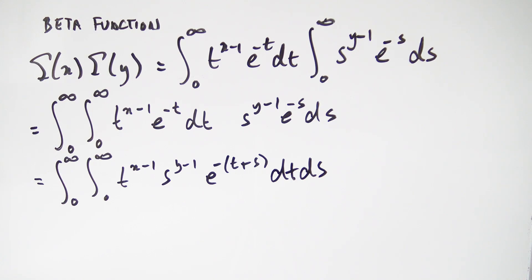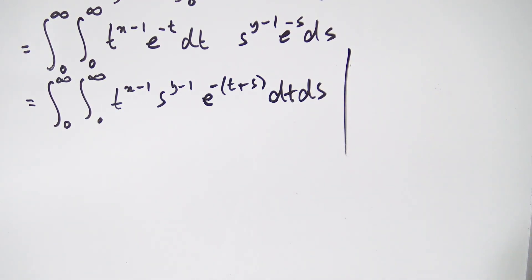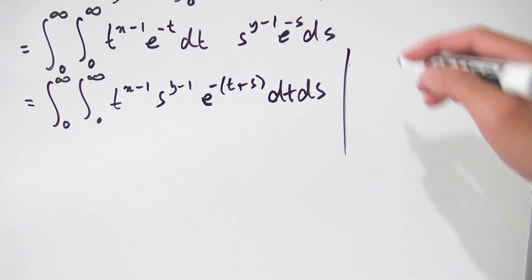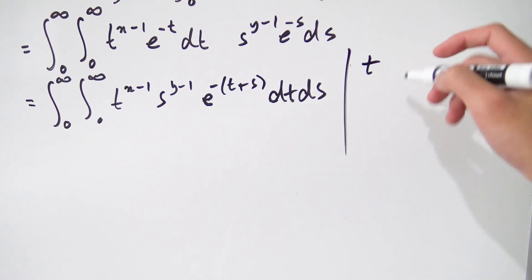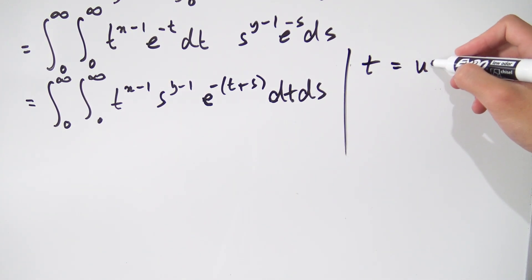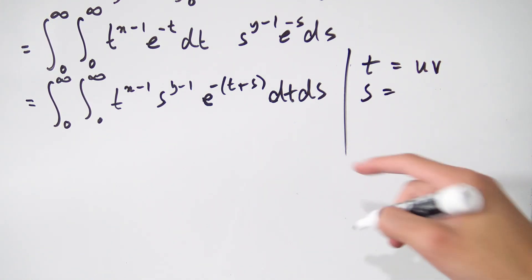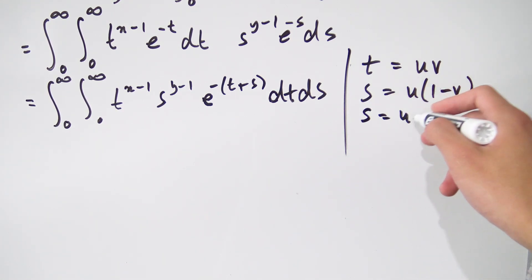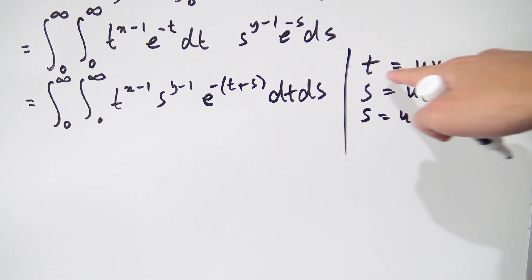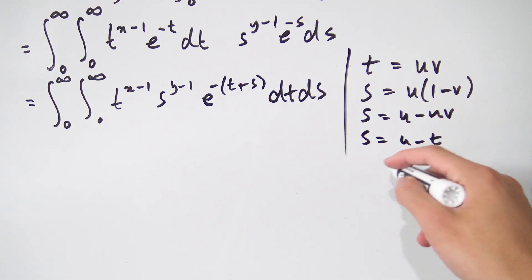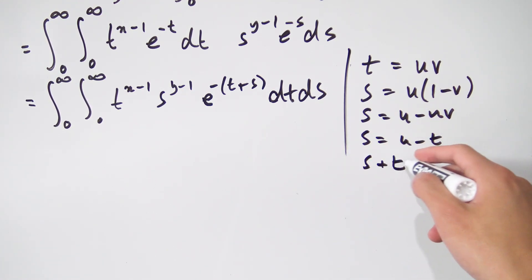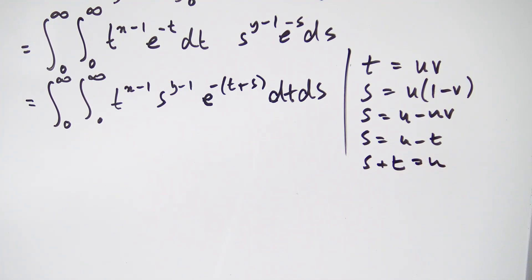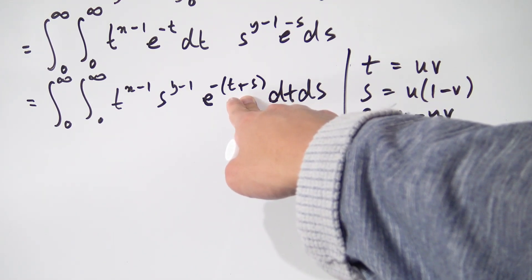Now I'll do a change of variables. Let t equal u times v, and let s equal u times (1 minus v). If you work through these equations, you find s equals u minus uv, and since uv is t, that gives s equals u minus t, or equivalently t plus s equals u. This is the motivation for the substitution — we're replacing t+s with a single new variable u.